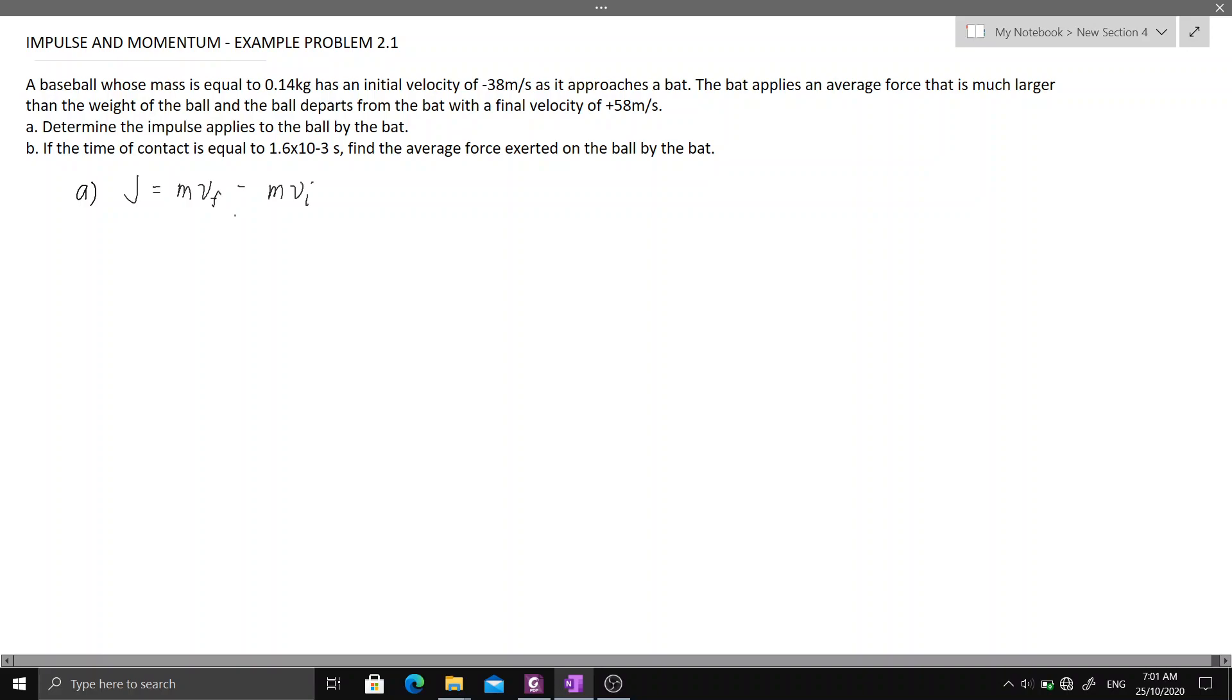This is a direct substitution. We know that the mass of the ball is equal to 0.14 kilograms times the final velocity which is positive 58 meters per second minus the mass of the ball times the initial velocity which is negative 38 meters per second. Calculating that is equal to 13.44 kilogram meter per second.